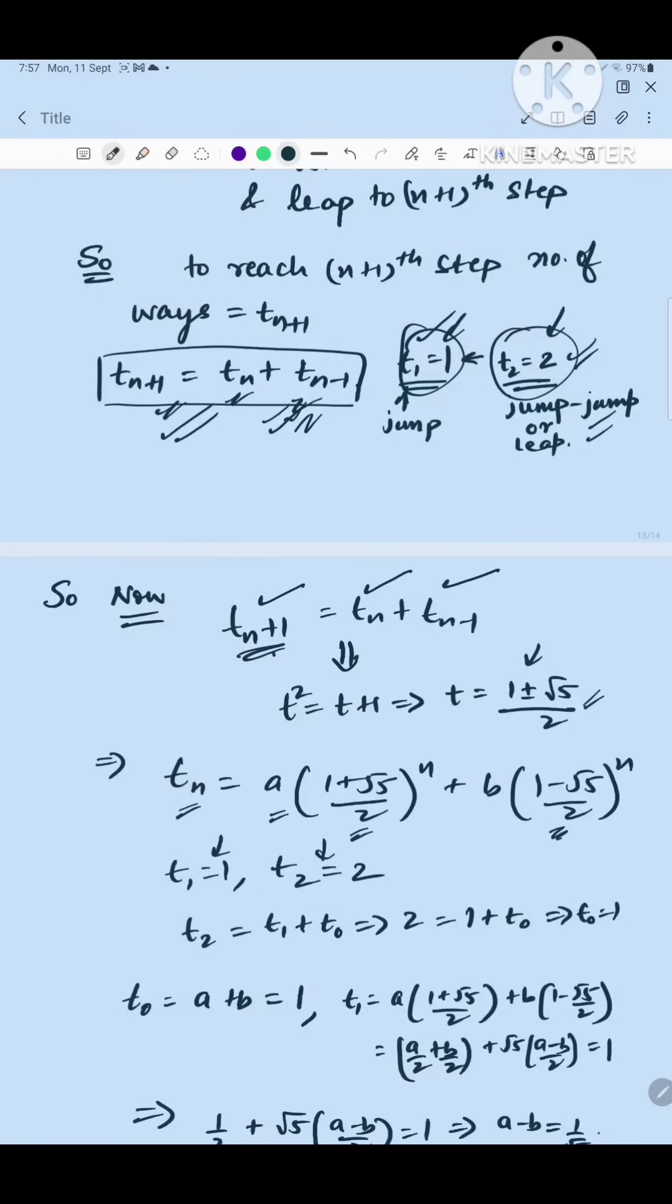So if we use this equation we can say t_2 is equal to t_1 plus t_0, so this means t_2 is 2, t_1 is 1, so t_0 will come 1. So t_0 is 1. Now what is t_0? If this is t_n, I put n is equal to 0, so I will get this number as 1, this number as 1, so a plus b is equal to 1.